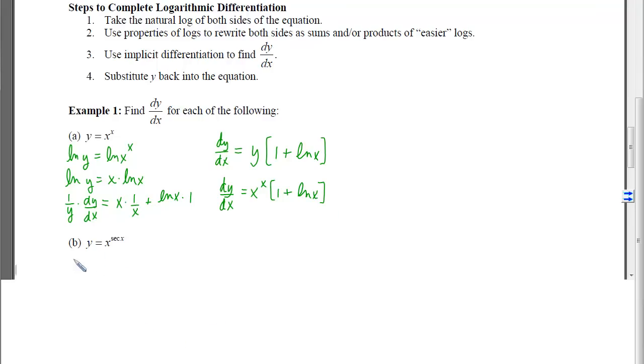If we try it again with part b, we will first log both sides. Then we use properties of logs to move that secant down in front, because remember, interior powers are the same as exterior coefficients. Then I differentiate both sides. And when I do that, on the left-hand side, I will have a 1 over the inside times the derivative of the inside. And on the right, I'll need to do the product rule. So the first one times the derivative of the second plus the second times the derivative of the first.